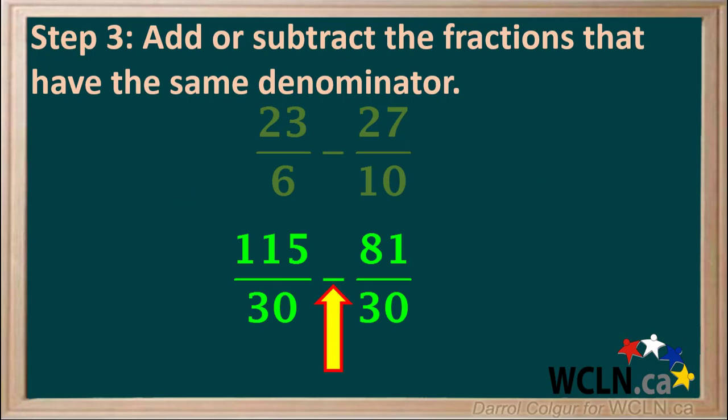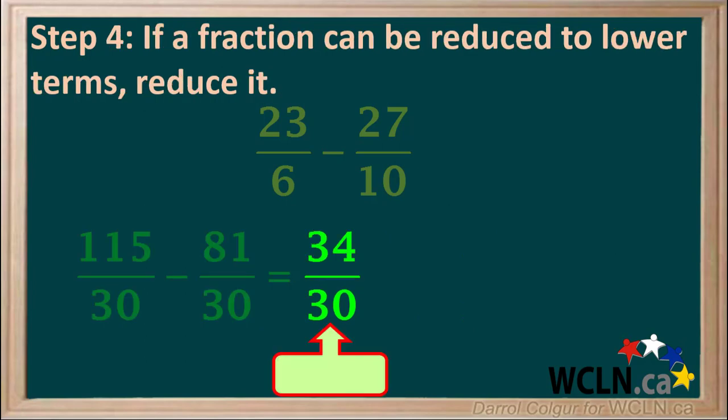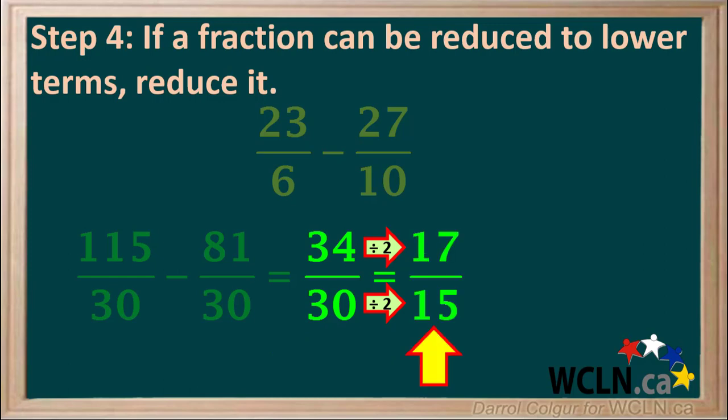Step 3 is to add or subtract the fractions that now have the same denominator. 115 over 30 minus 81 over 30 equals 34 over 30. Step 4 is to look at the fraction and see if it can be reduced to lower terms. Notice 34 and 30 are both divisible by 2, so 34 over 30 can be reduced by dividing both by 2, which gives us 17 over 15.